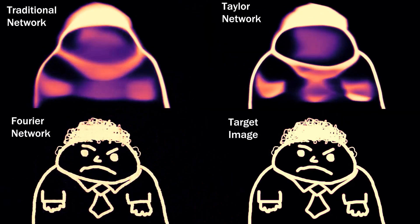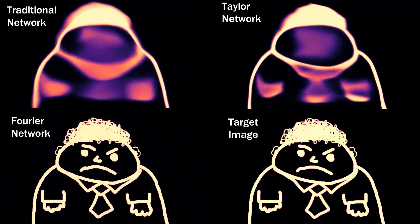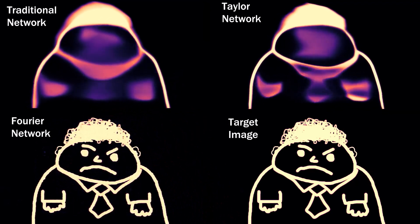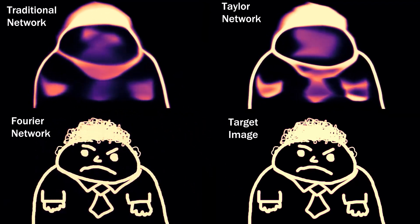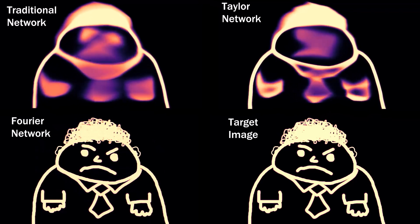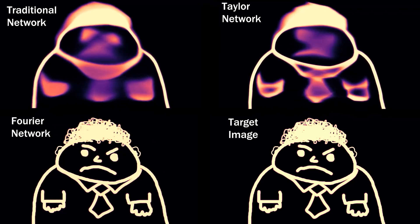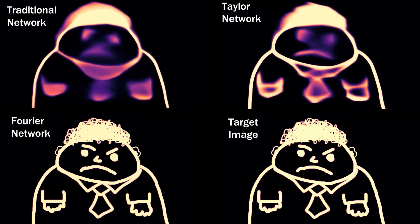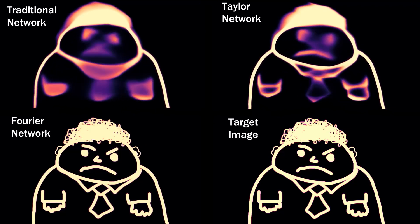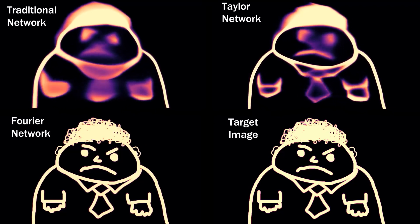If we compare it to networks of the same size trained for the same amount of time, we can see the Fourier network learns much better and faster than the network without Fourier features or the one with Taylor features. Just look at the level of detail in those curly locks — you can hardly tell the difference from the real image.